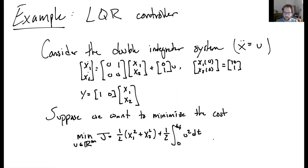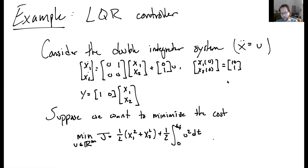With initial conditions, we're going to start at a position of 10 and a velocity of 1. We're only going to measure the first state x1. Suppose we want to minimize the cost: one-half x1 squared plus x2 squared, plus one-half times the integral from zero to some final time Tf of the input squared dt.